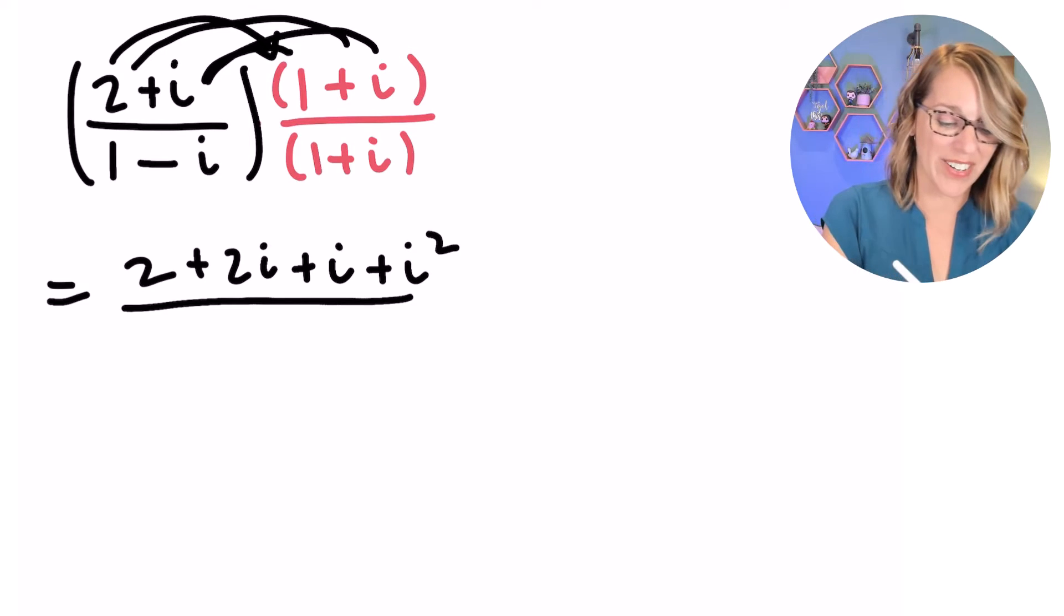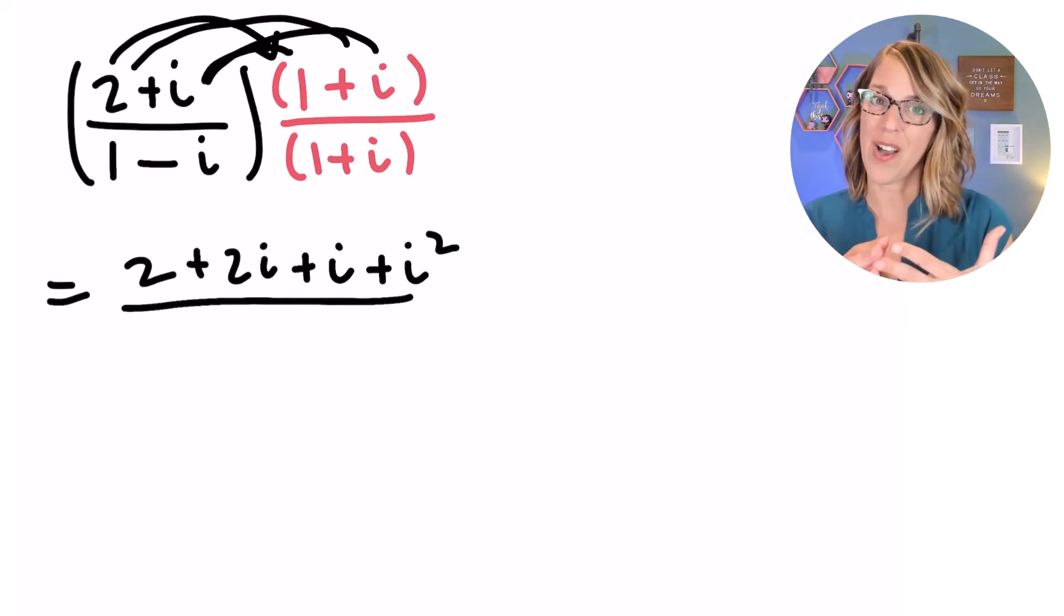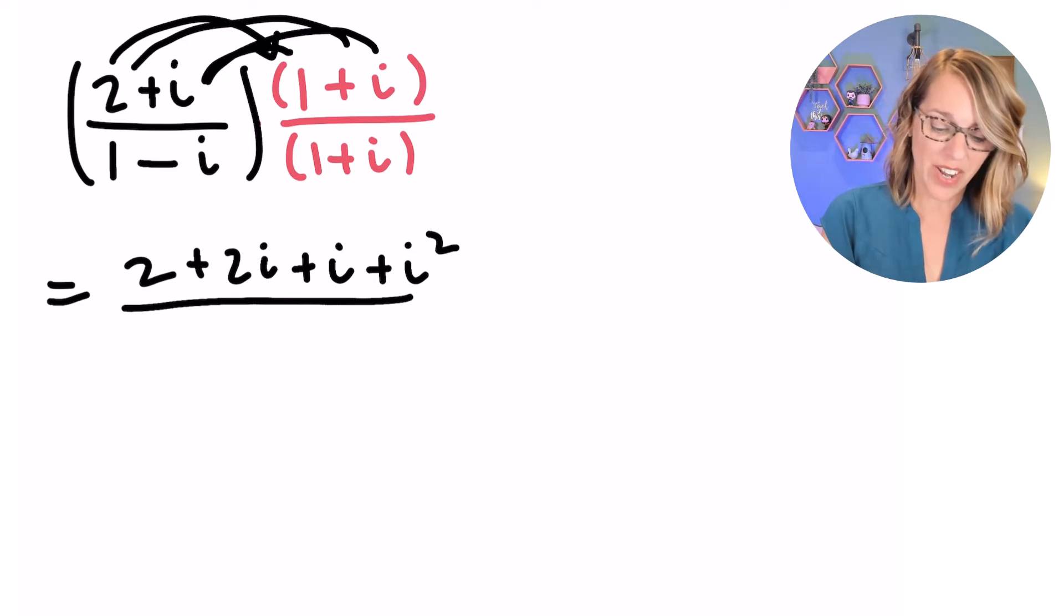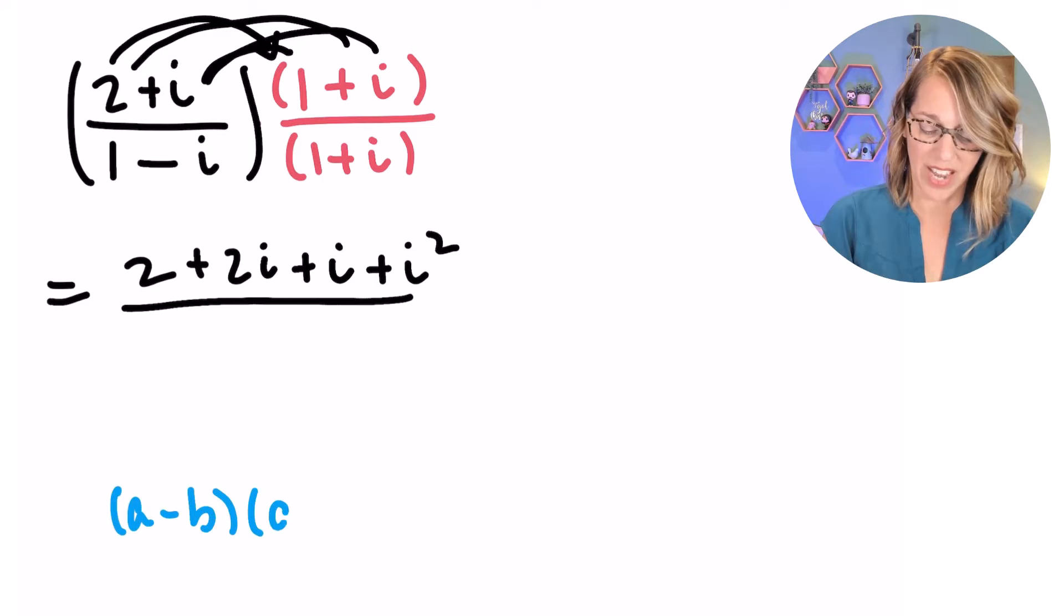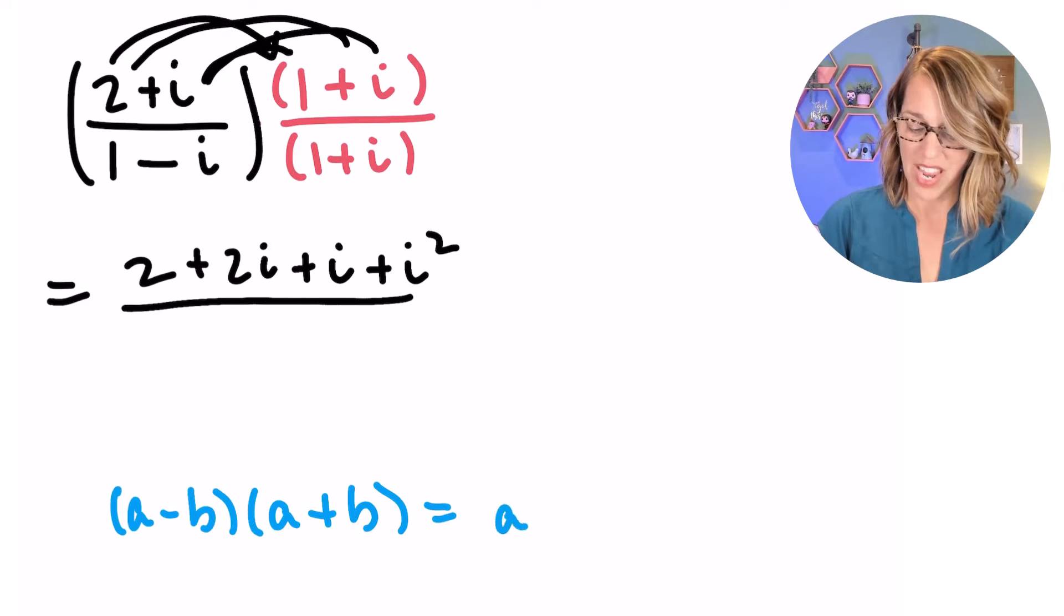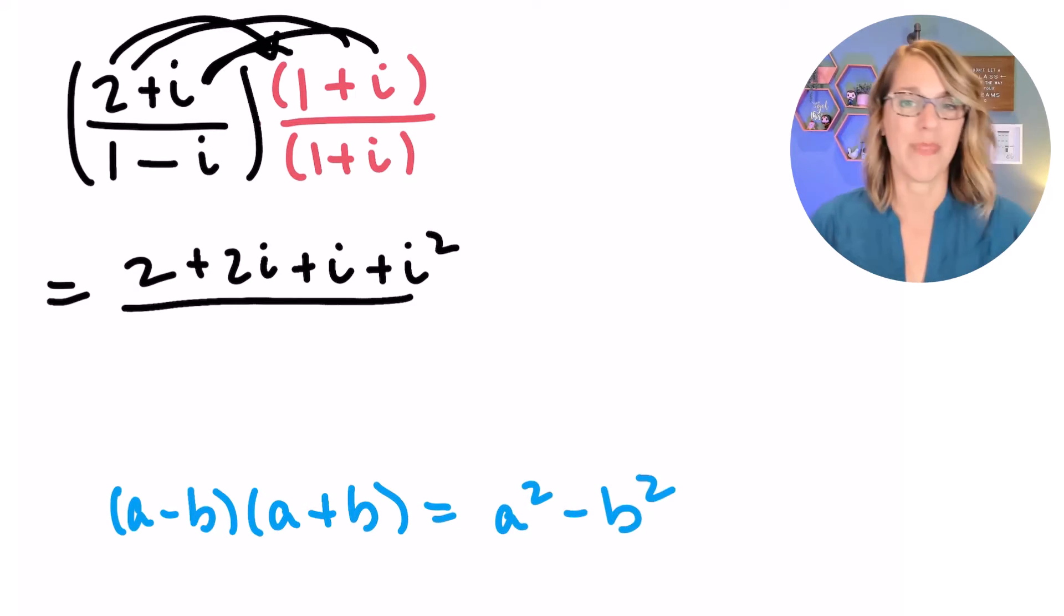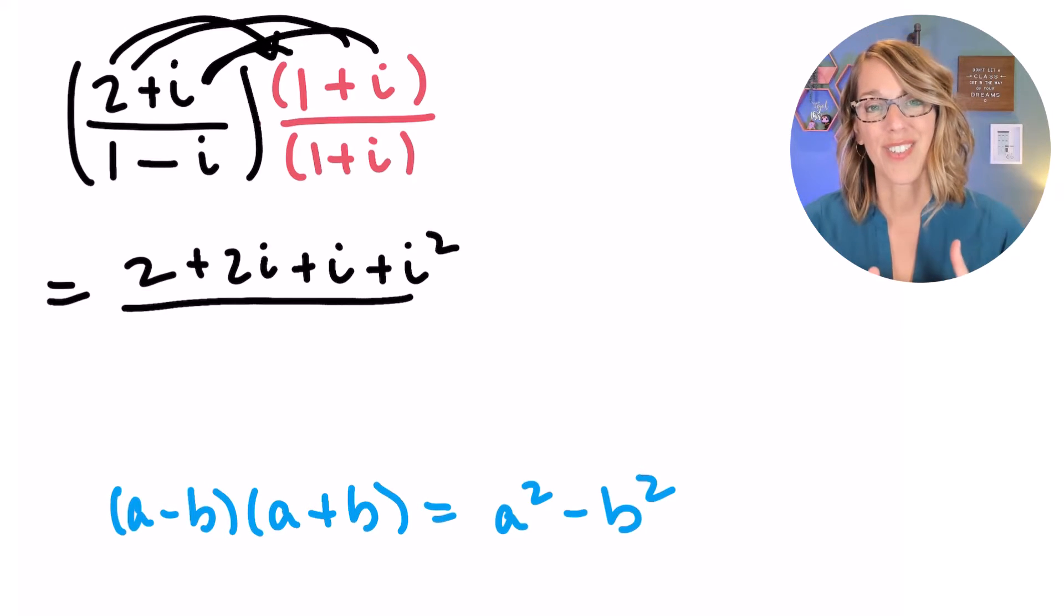In my denominator, I'm going to go ahead and FOIL this one out as well. But I know that I can also use the rule A minus B times A plus B is equal to A squared minus B squared.